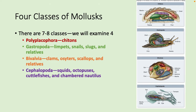The four classes of mollusks — there are actually seven to eight, but we'll focus on four. Polyplacophora, which are your chitons. Gastropoda, your snails and slugs. Bivalvia, which includes clams, oysters, and scallops — two shells hinged together. And Cephalopoda, which are squids, octopuses, cuttlefish, and the chambered nautilus.